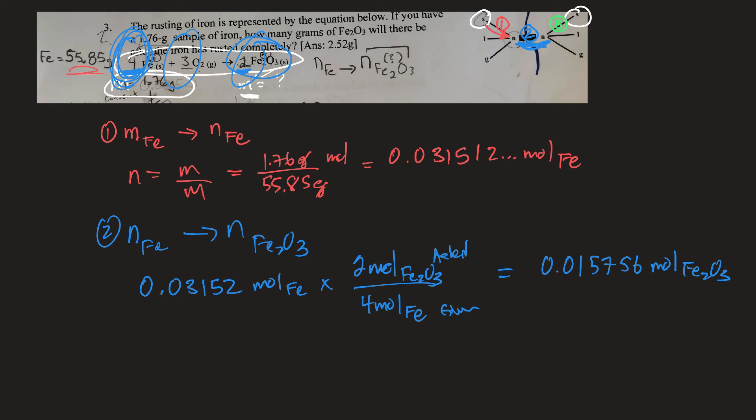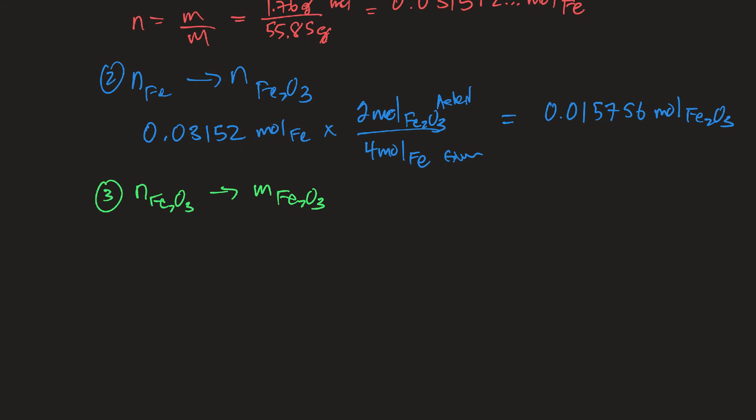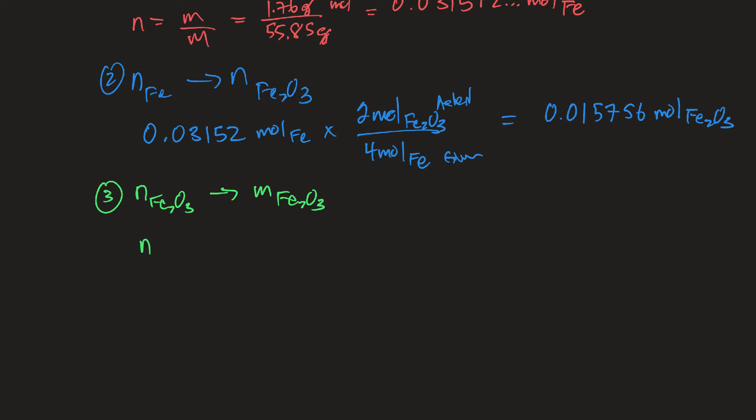So my last step is to convert from moles of Fe2O3 to grams of Fe2O3. So third step, go from moles of Fe2O3 to mass of Fe2O3. Okay. So to do that, my formula is moles is equal to mass over molar mass. But this time I'm trying to solve for mass. So I'll multiply both sides by molar mass. Here they'll cancel. And so my formula is mass is equal to molar mass times moles.